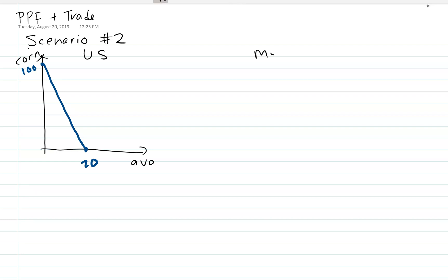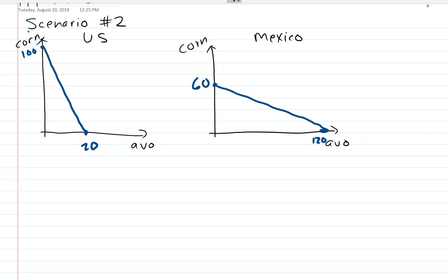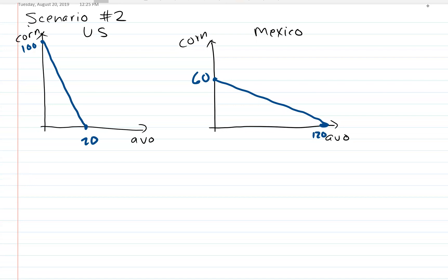Now we can draw the PPF for Mexico, using the same two products. For Mexico, they could do 60 corn if they put all resources towards corn, and 120 avocados if they put all resources towards avocados. So their PPF would look like this. That's just translating the numbers from the notes into PPF format.